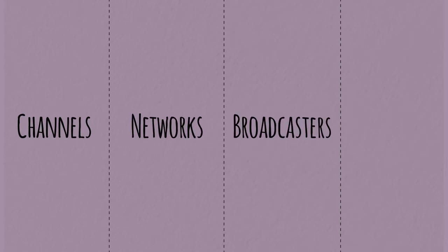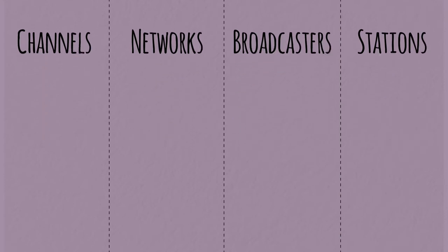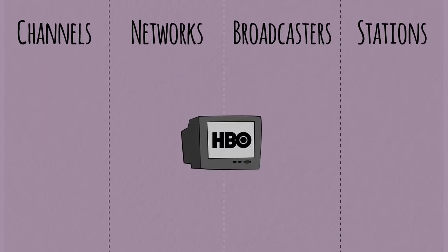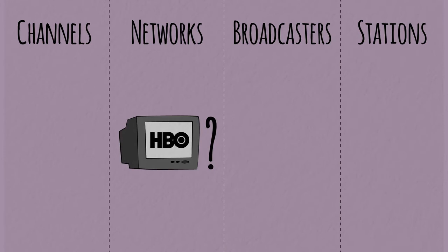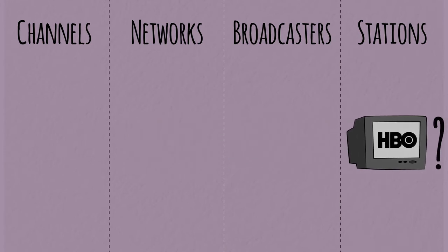First, we need to establish four terms: channels, networks, broadcasters, and stations. What is the difference between these? When you watch HBO on TV, are you watching a channel, a network, a broadcaster, or a station? You will see these terms used inconsistently, but here is a good place to start.